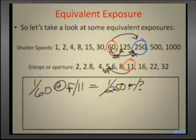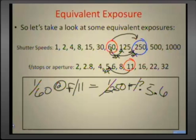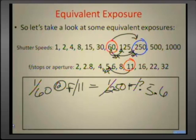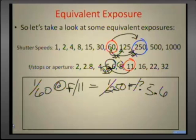From f11 to f5.6 allows four times the amount of light to pass through the lens, so these would be equal. A 60th of a second at f11 equals 1/250th at f5.6. Just remember: what you do with one — the shutter speed — you have to do with the other, which is the aperture. We're making the shutter go faster, so we compensate by opening up the aperture from f11 to f5.6 — two stops, which is four times the amount of light.